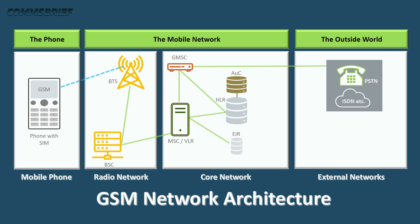A GSM mobile phone establishes a connection with the nearby base station, called the BTS or Base Transceiver Station. A transceiver is a device that can transmit and receive simultaneously — so transmit and receive becomes 'transceive.'